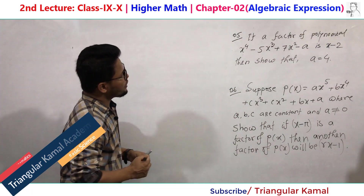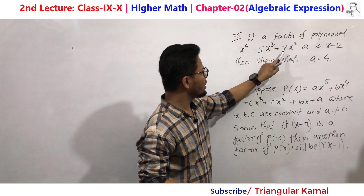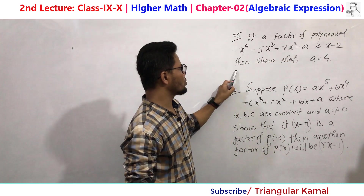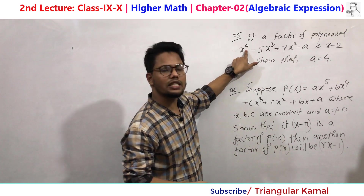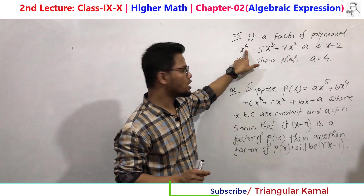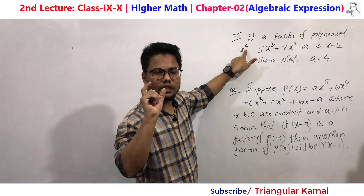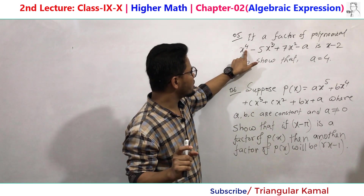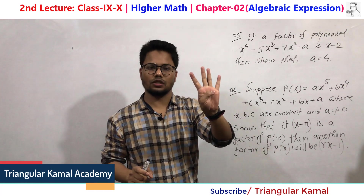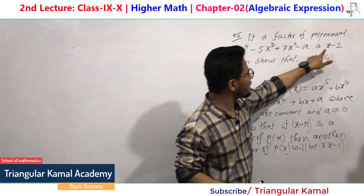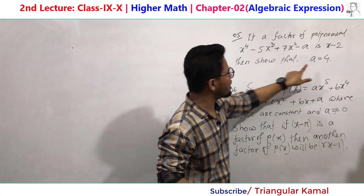Number 5: if a factor of the polynomial x to the power 4 minus 5x cubed plus 7x squared minus a is x minus 2, then show that a equals 4. This is a standard polynomial equation where the maximum leading power of the variable is 4 and the leading coefficient is 1. The number of factors depends on the power, so here we will get 4 factors. Within these 4 factors, only one factor x minus 2 is given, and using this factor, show that a equals 4.